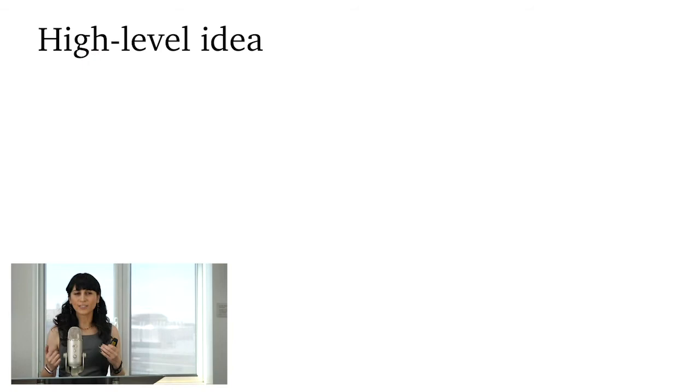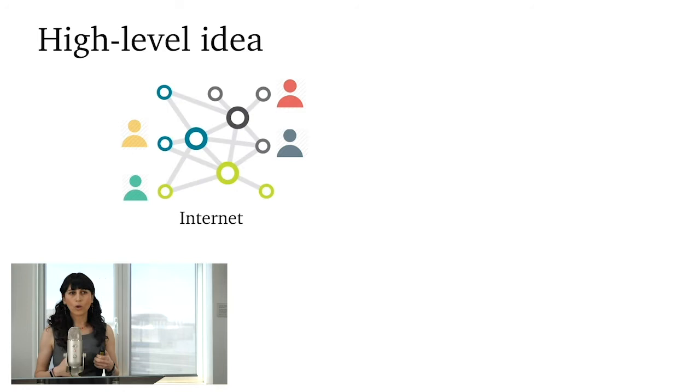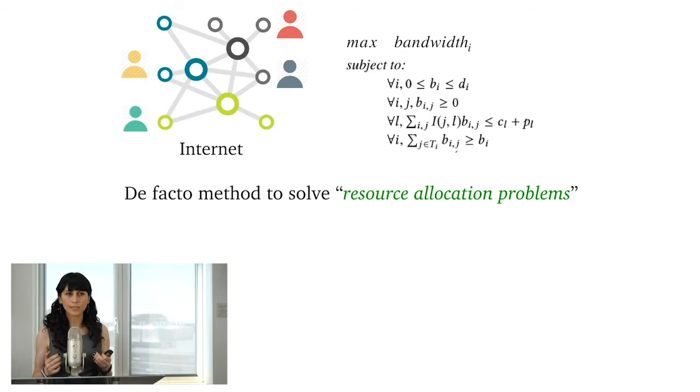So the high-level idea is as follows. Let's say that there's a shared resource, like the internet, and a bunch of users, like you and your neighbors, who want to use this resource together. And so the goal of the network provider, say like Comcast, is to allocate this resource to these users optimally and fairly. And so usually this is often done by solving an optimization formulation with the objective of maximizing some notion of performance with a set of constraints. And so this method has been used for many years as the common technique to solve resource allocation problems in networking.